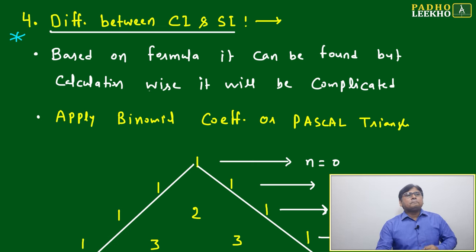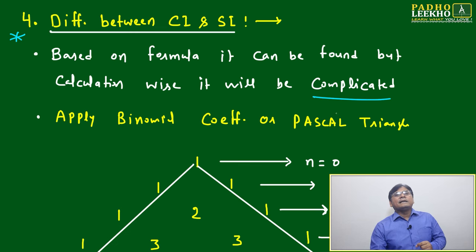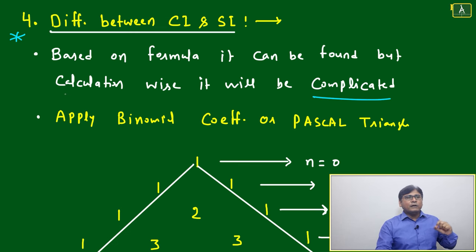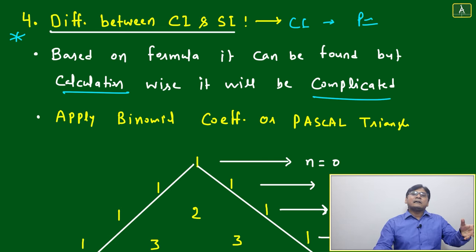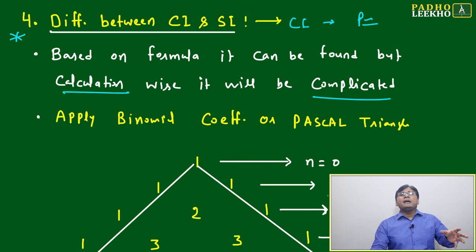But here our purpose is something different. If we depend only on calculation based on the formula, many times it will become complicated because CI comes in power format. Calculating power format in a complete mathematical way and then subtracting simple interest is not easy - it will consume time.